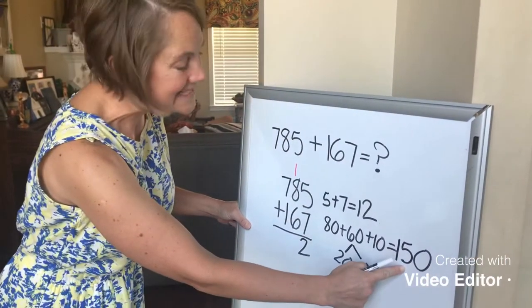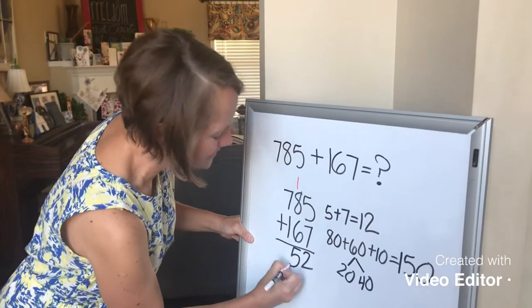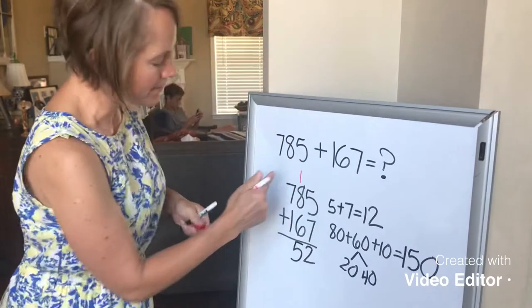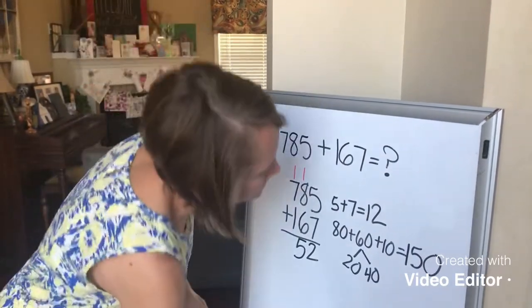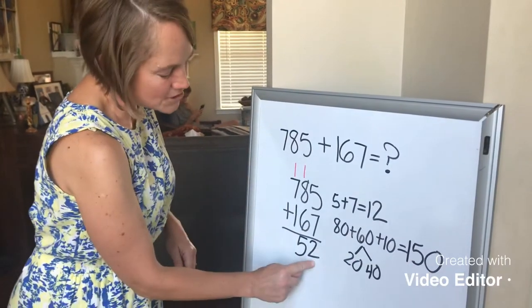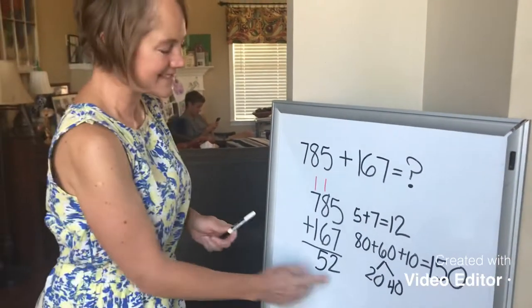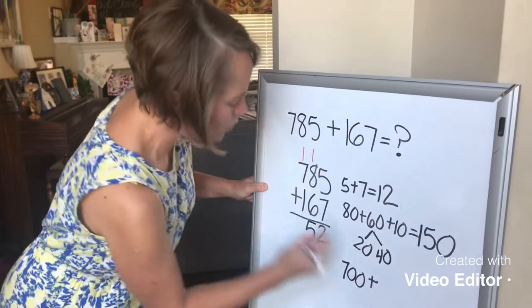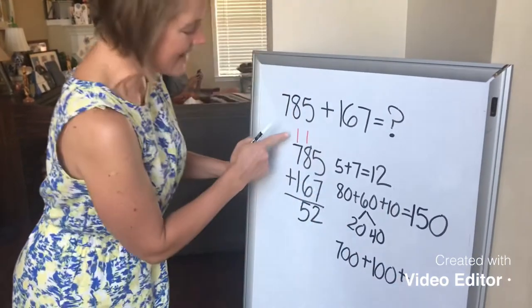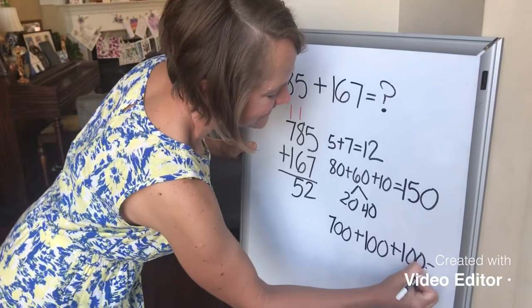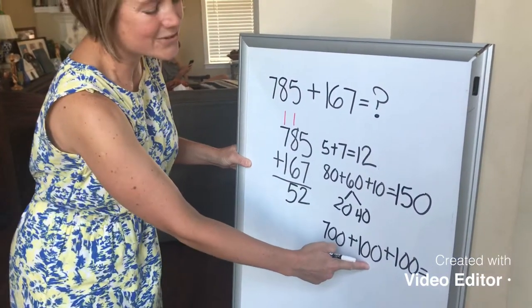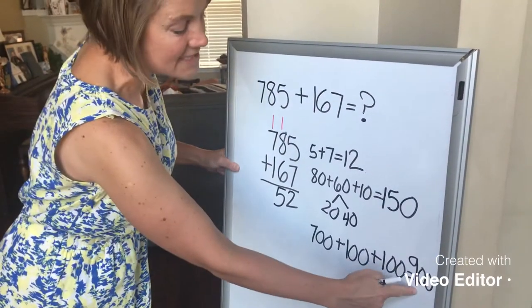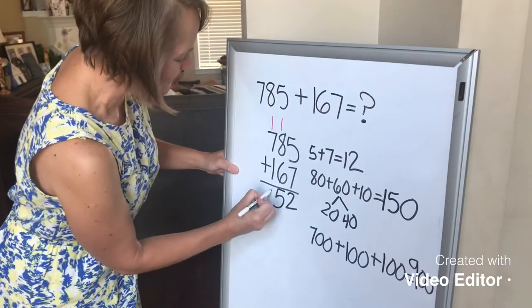Of course, only the 10s digit can go here in the 10s column. I'm going to take this 1, which represents 100, and I'm going to carry it on top of my other 100s. And now I can add up my 100s. I've got 700 plus 100 plus that extra 100 that we were carrying. And 700 plus 100 is 800, plus another 100 is 900. And the only digit that I'm going to use is the 9 in the 100s place. It goes right here.